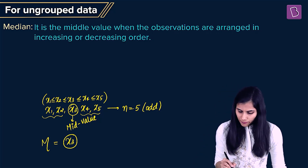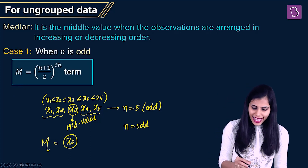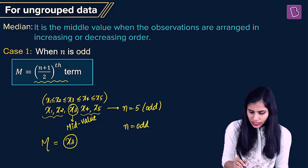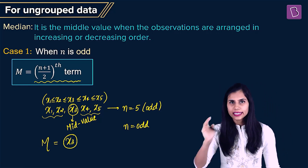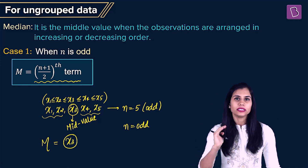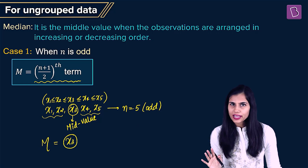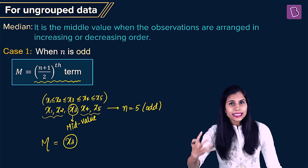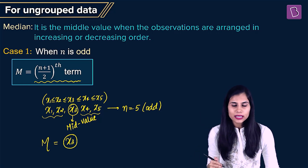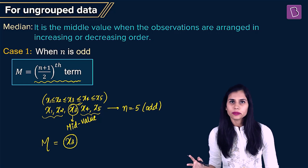In general, whenever the number of observations is odd, the (n+1)/2-th term happens to be the unique middle term of that data set, which you declare to be the median. For example, with n equals 5 (which is odd), the (n+1)/2-th term is 6/2, that is the third term, which is the only middle term, and hence we declare it to be the median.